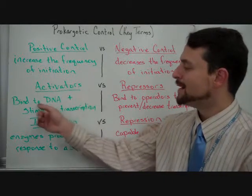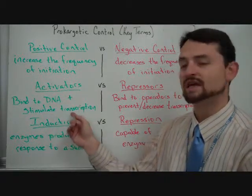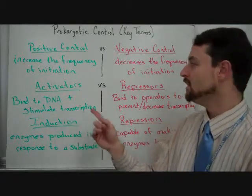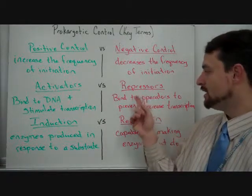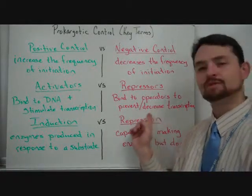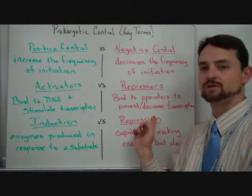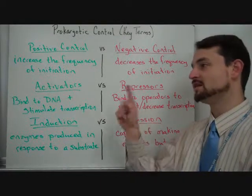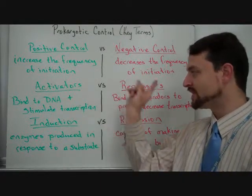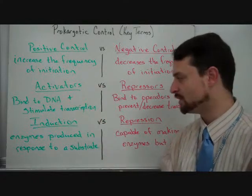An activator binds to DNA and stimulates transcription, whereas a repressor binds to the operator to prevent or decrease transcription. And what you're going to find in a minute is some of these actually all work together, so you'll see how that works.